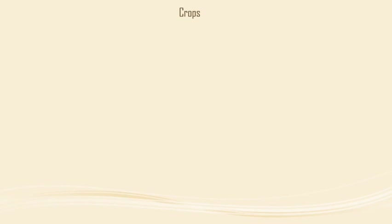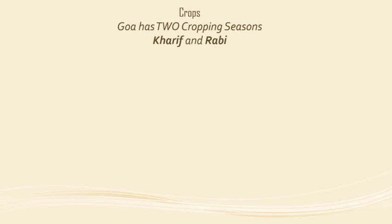Now let us learn about crops. Goa has two cropping seasons, namely Kharif and Rabi. Kharif crops are grown during the rainy season.